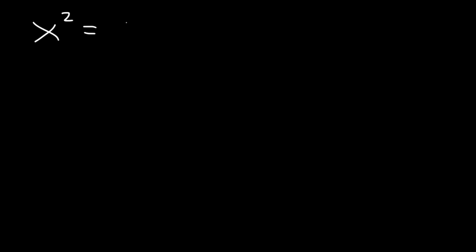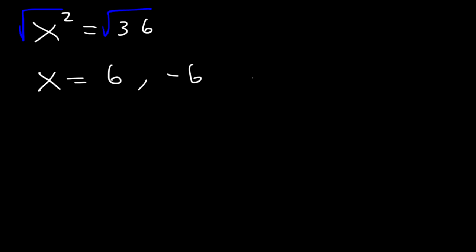In this video we're going to focus on solving simple quadratic equations. Let's say that x squared is equal to 36 — what is the value of x? All you need to do is take the square root of both sides. The square root of 36 is 6 or negative 6, because 6 times 6 is 36 and negative 6 times negative 6 is 36, so we get two answers.